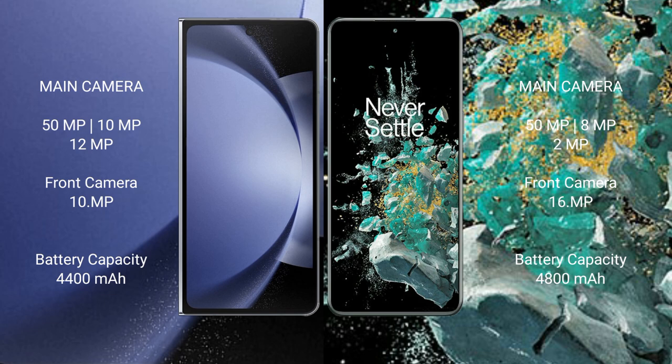Samsung Galaxy Z Fold 6 has a 4400mAh battery with 45W fast charging support. OnePlus 10T has a 4800mAh battery with 150W fast charging support.